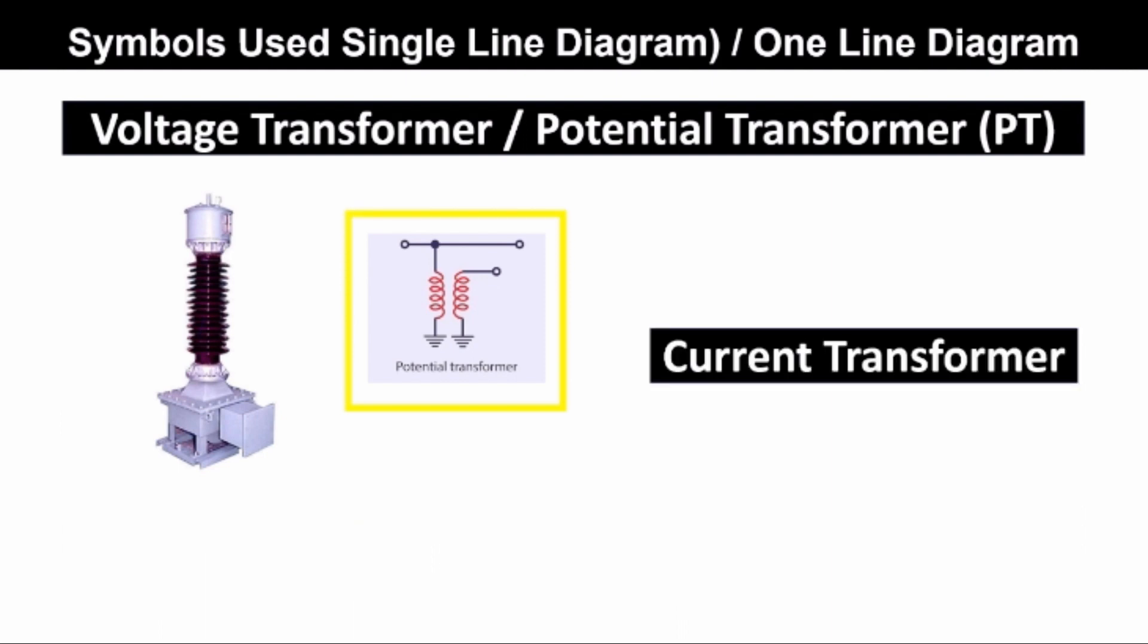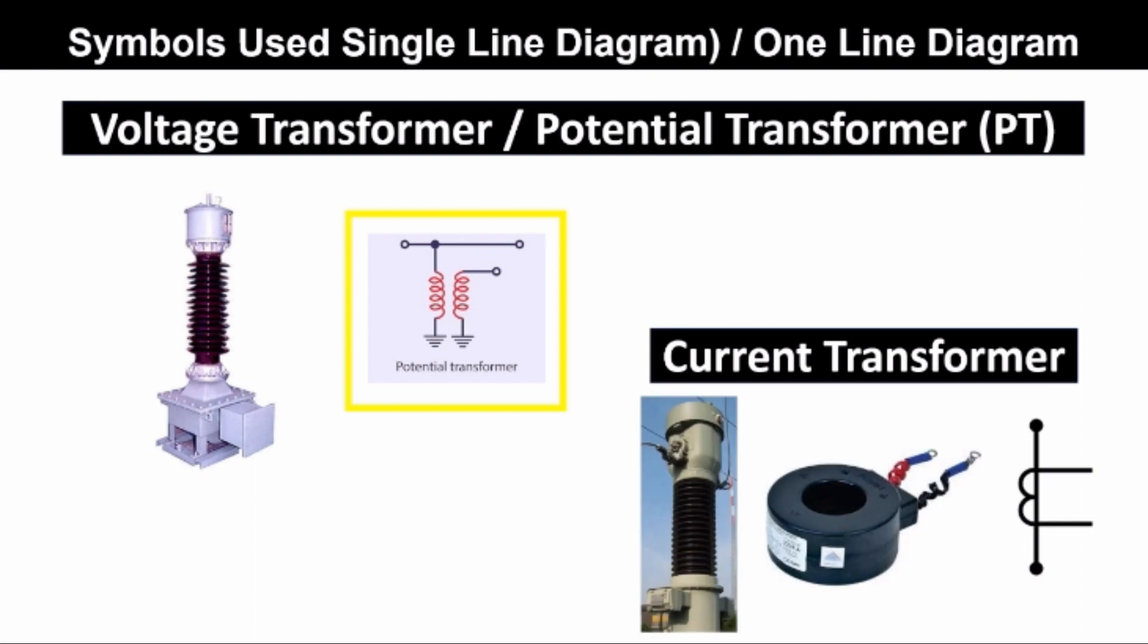Current transformer. This is the current transformer used in substation, and this current transformer is generally used for low voltage purposes. And the symbol of the current transformer is this one.